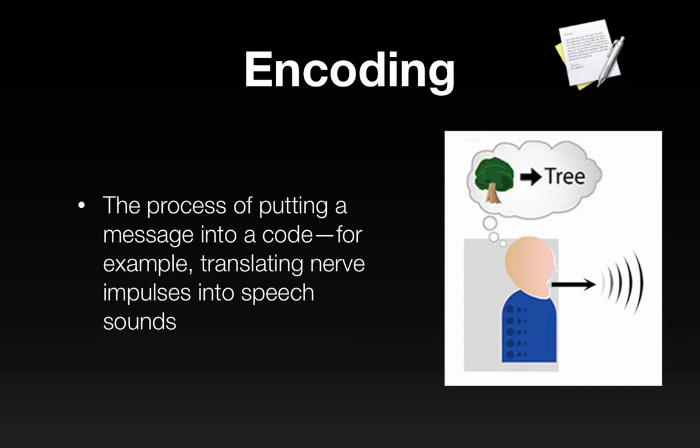That brings us to our next term: encoding, which is the process of putting a message into a code — for example, translating nerve impulses into speech sounds. The sender does this. This is something happening inside my brain right now; I am translating my brain impulses into audible sounds that I'm articulating with my mouth — in other words, I'm talking. That's encoding. So when I say the word 'tree,' that's not a tree — it just puts the image of a tree in your mind.